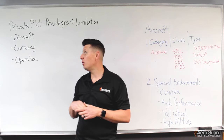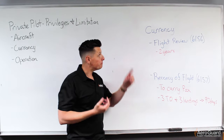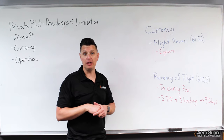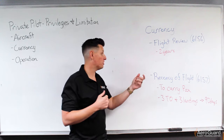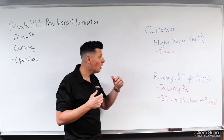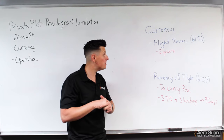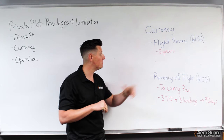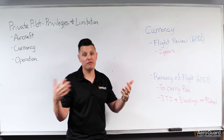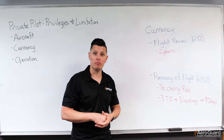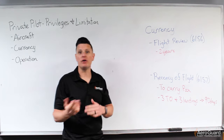Now let's jump over to currency. There are two particular regulations to focus on. One is 61.56, which talks about a flight review, and the other is 61.57, which talks about recent flight experience. The flight review identifies whether we are eligible to exercise our privileges as pilot in command. It applies to all pilots and requires that every 24 calendar months we complete either a checkride for another rating or certificate, or a flight review with a flight instructor — which is a minimum of one hour ground and one hour of flying.